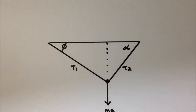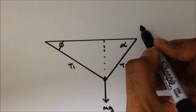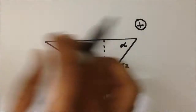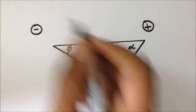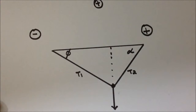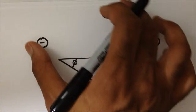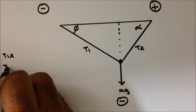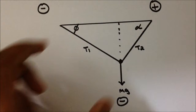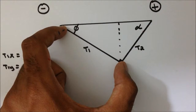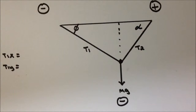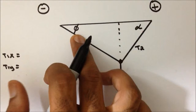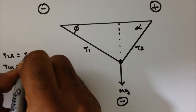Before we proceed, we want to choose a frame of reference. Everything directed towards the right will be positive. All forces directed towards the left will be negative. All forces directed upward will be positive, and anything directed downward will be negative. We will begin with T1. T1 will have a component in the x-direction and a component in the y-direction. Multiplying the magnitude T1 by the cosine of theta gives us the x-component — T1 cosine theta.